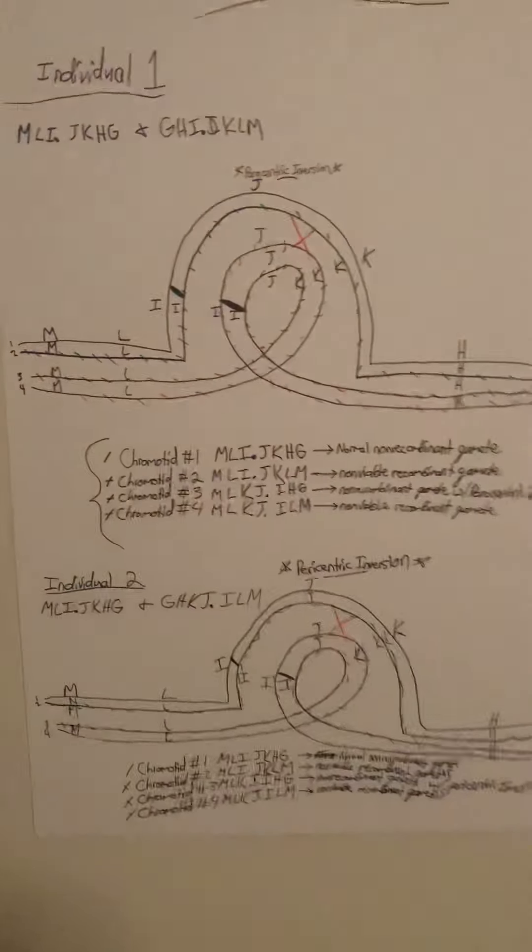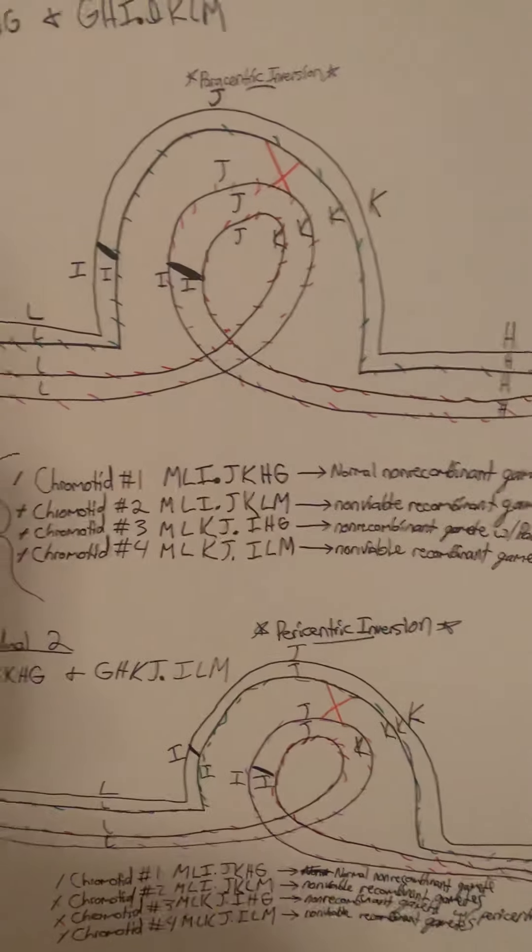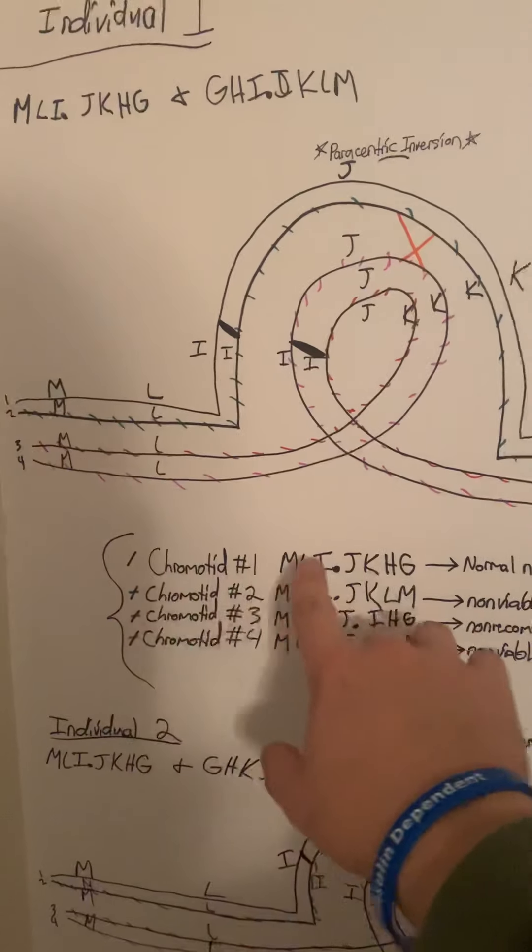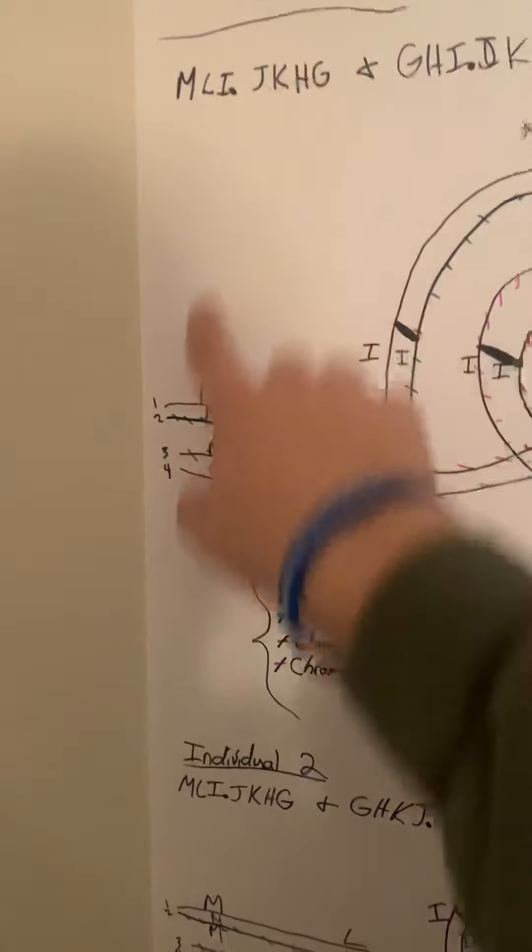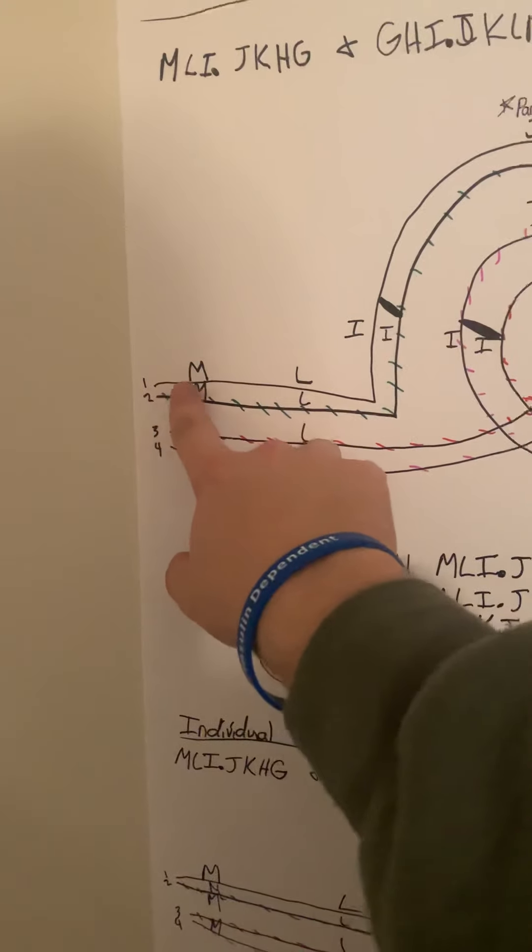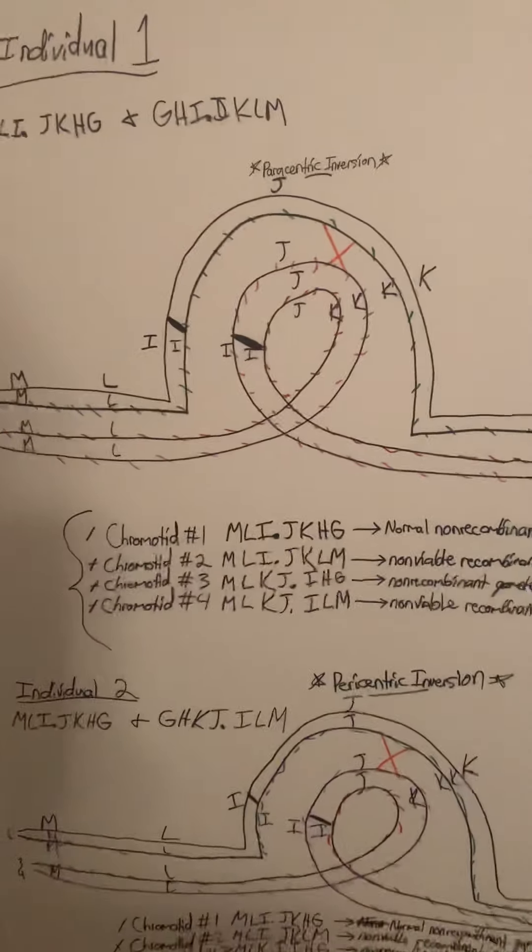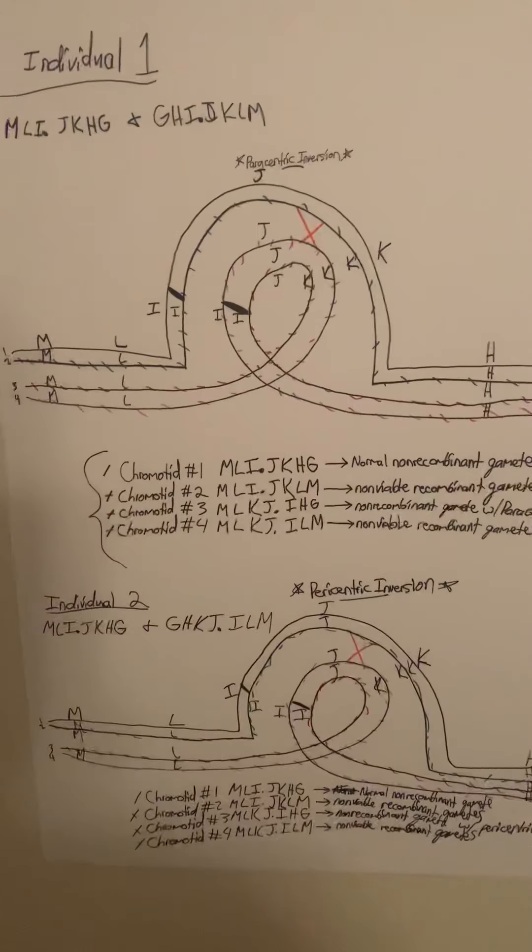We want to figure out the chromatids and the results for them. For the first one, it would be the exact same thing as this one up here because the first one is not affected. If you go all the way around, it is not involved with the crossover. So it would be a normal non-recombinant gamete because it's not crossed.